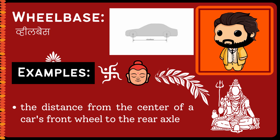The distance from the center of a car's front wheel to the rear axle. You can see a picture. So, the distance between the center of the car's front wheel and the center of the rear wheel — the distance between the two tires — we call this the wheelbase.